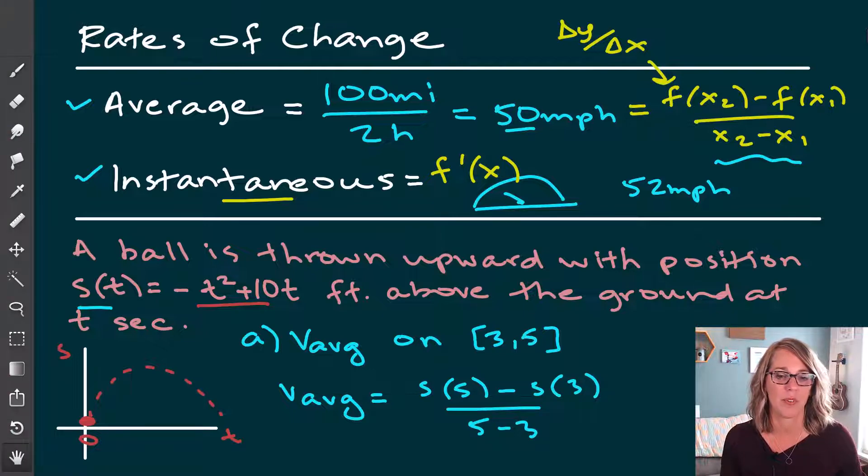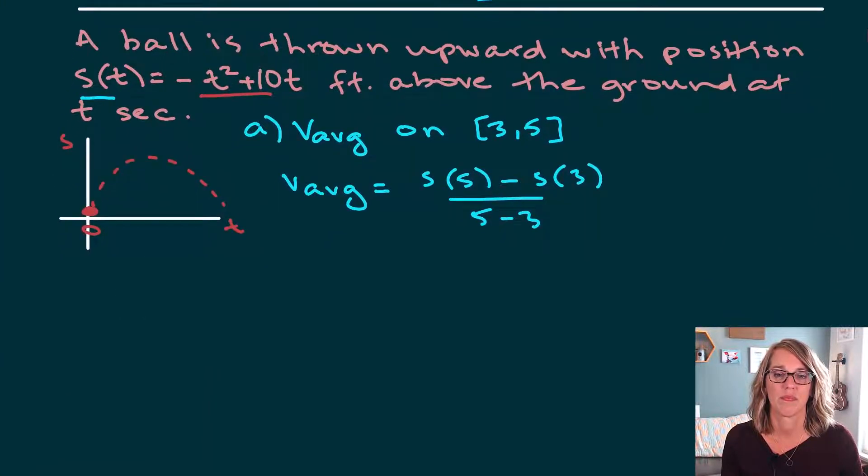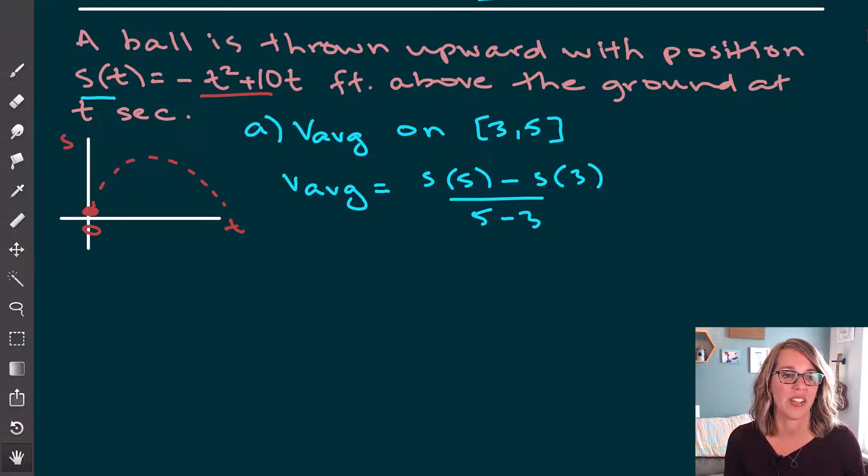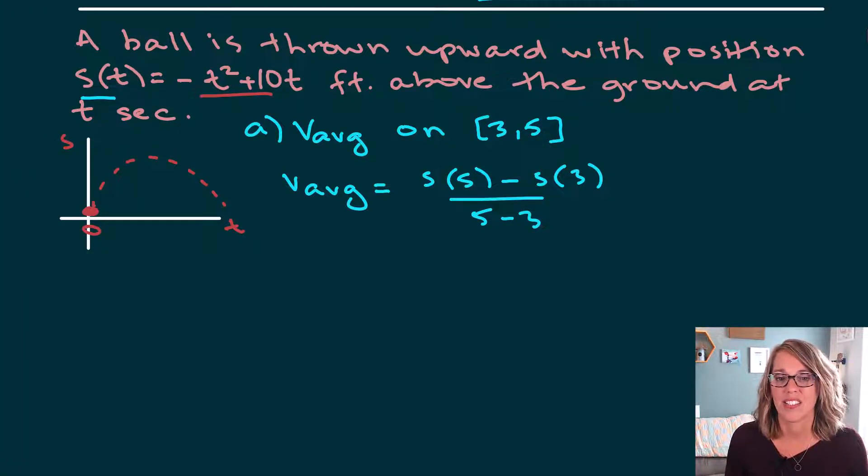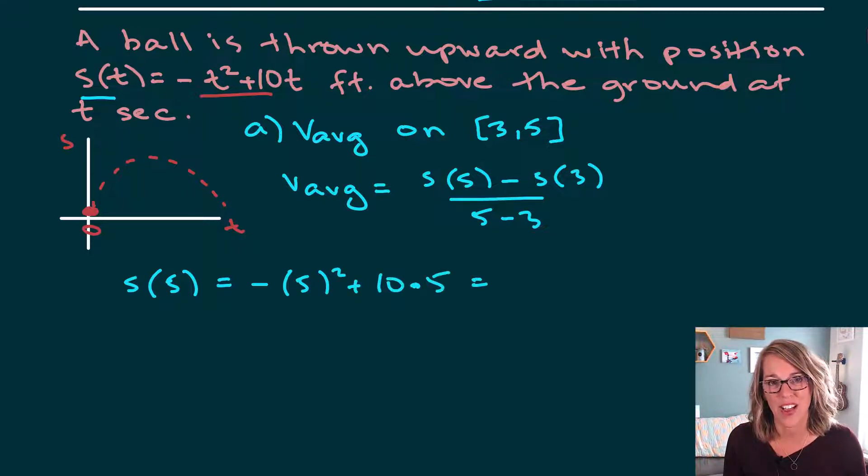Let me give myself a little more room and we can finish doing the math. Let's do s of five. So s of five, I'm just going to do that separately here. That's going to be negative t squared. So negative five squared plus 10 times five. So that's going to be negative 25 plus 50, which is going to be 25.